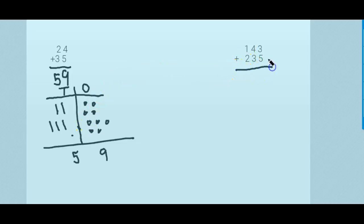Let's go to numbers that have three digits. So here you have 143 plus 235. You start on the ones. So 3 plus 5 equals 8, and 4 plus 3 equals 7, and 1 plus 2 equals 3. So that would be 378.